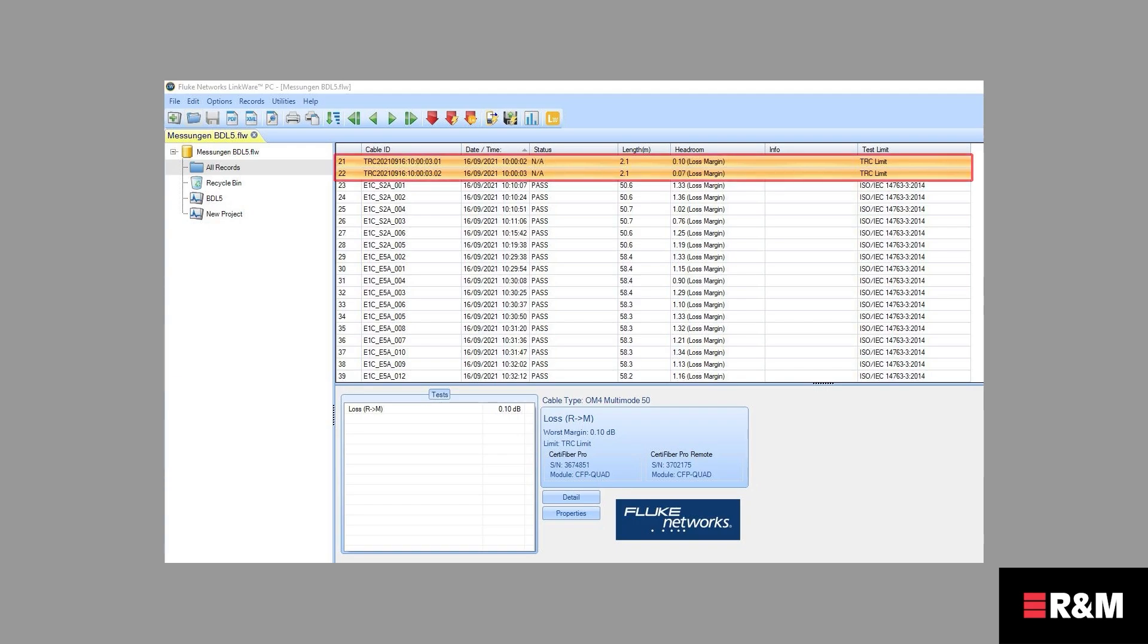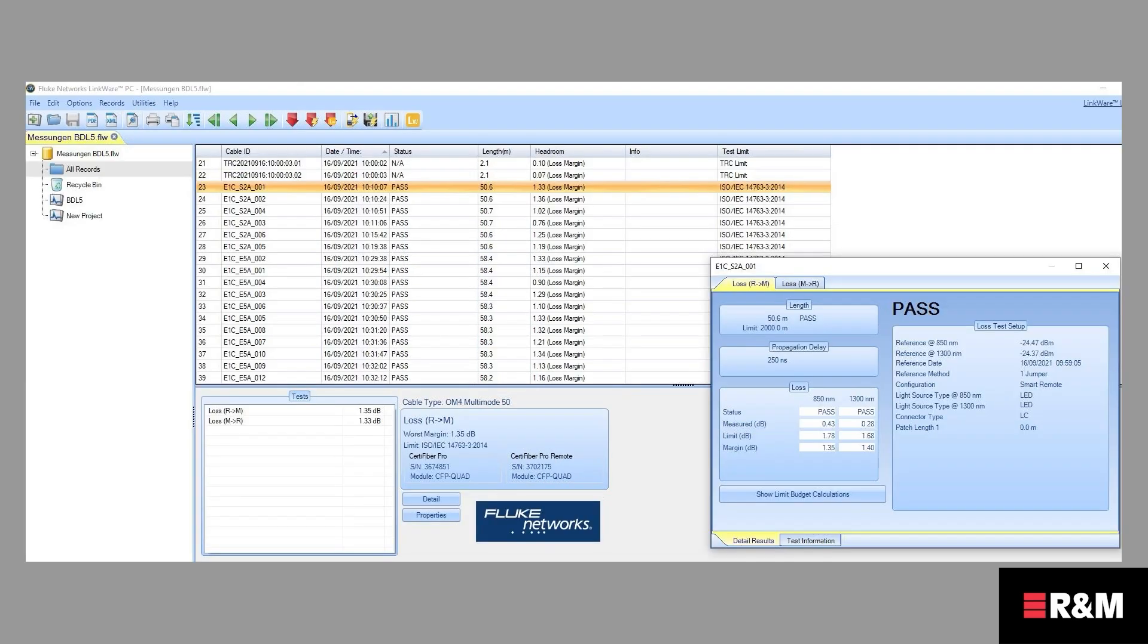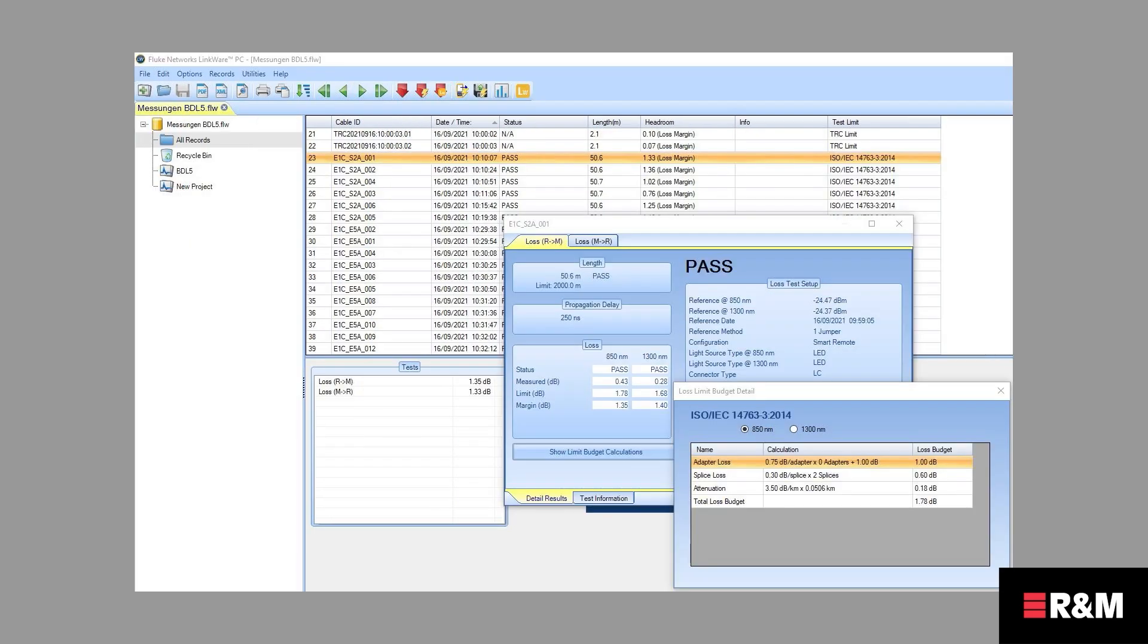You can see here the test reference cords as the top two results. This overview shows you the cable IDs, measuring data, status on pass-fail, fiber length, headroom, that is the loss margin, and the test limit standard and all the information that was selected as part of the referencing and verification. When you click on the Show Limit Budget Calculation button, you can see the calculation used for this link.